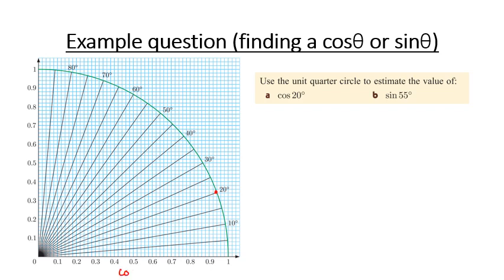Now our x-axis is our cosine, our y-axis is our sine. So our cosine of 20 is going to be around about 0.93.